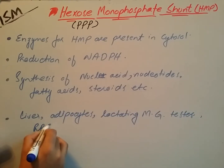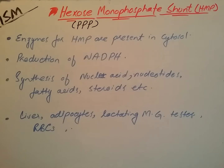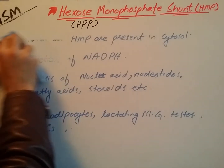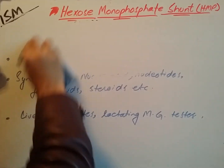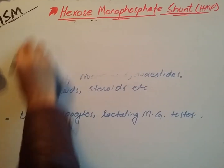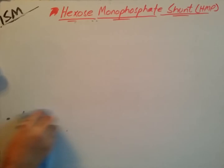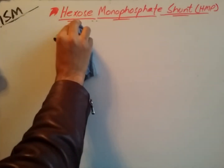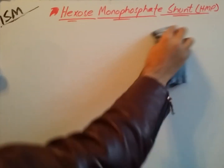These are very active cells which perform the hexose monophosphate shunt very actively. The hexose monophosphate shunt has two phases: one is the oxidative phase and the second is the non-oxidative phase. In this video we will discuss only about the oxidative phase.